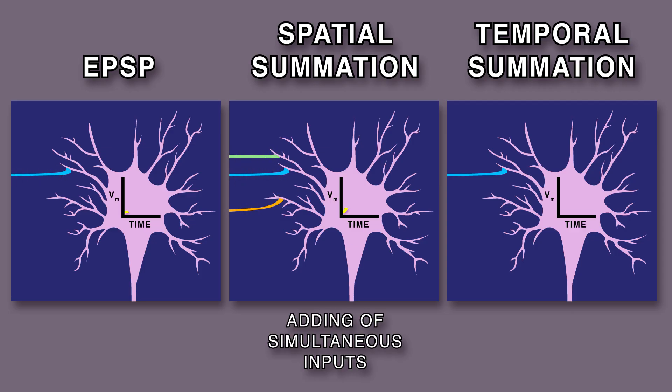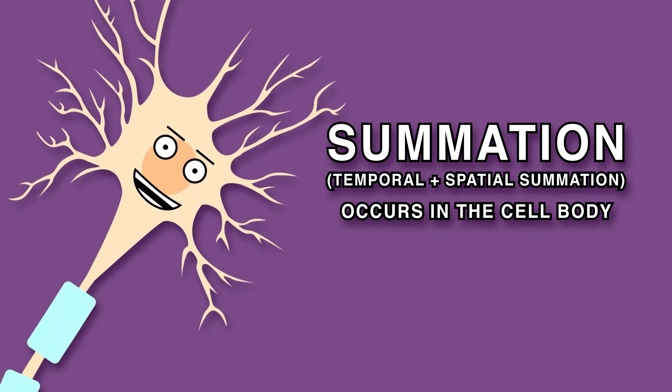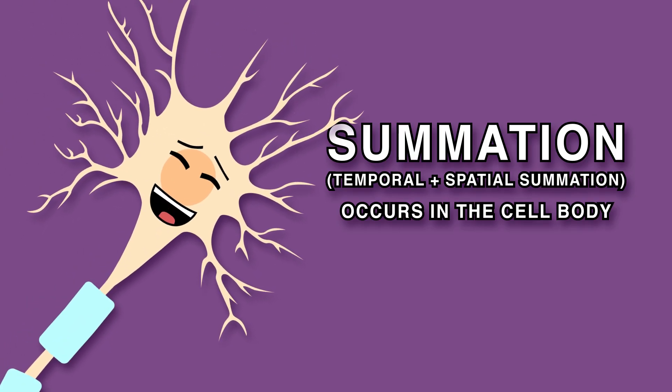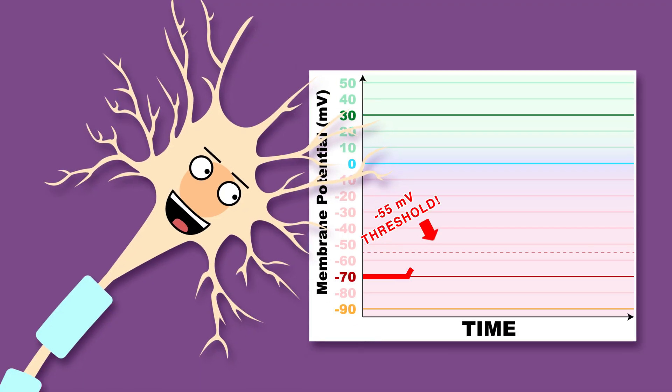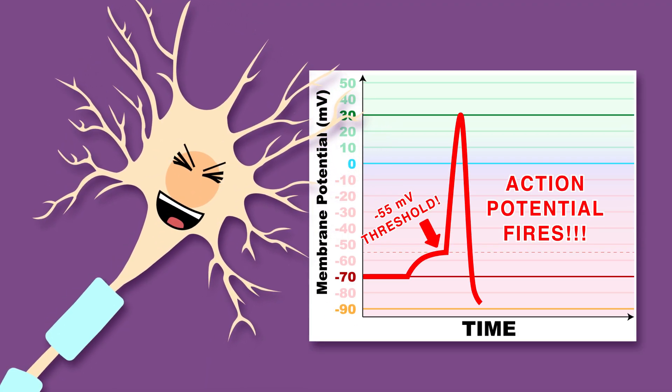Spatial summation is adding of simultaneous inputs, while temporal summation is adding of repeated inputs. The cell body is where summation transpires, at the minus 55 threshold, an action potential fires.